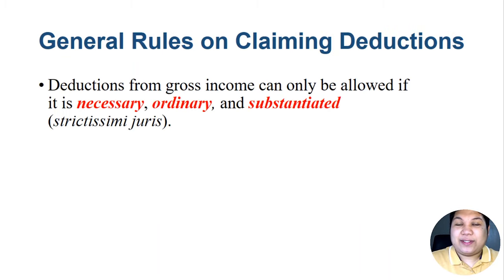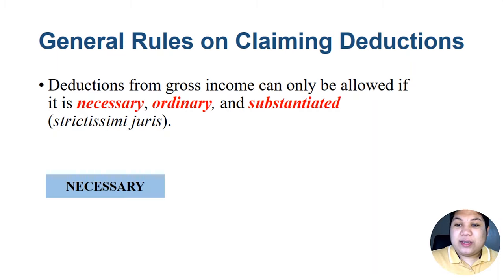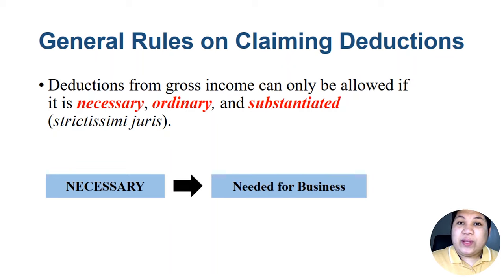General rules on claiming deductions: deductions from gross income can only be allowed if they are necessary, ordinary, and substantiated. This is in accordance with the strictissimi juris rule, which requires taxpayers claiming deductions to substantiate their claims by presenting evidence of their entitlement. By 'necessary,' we mean items which are needed for the business.